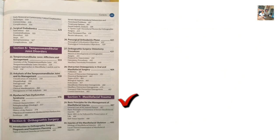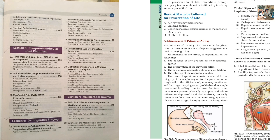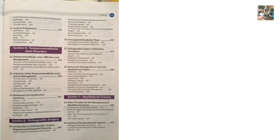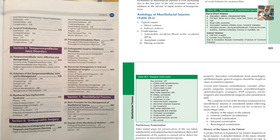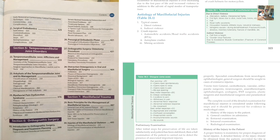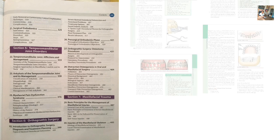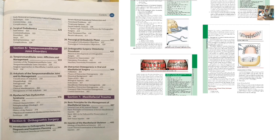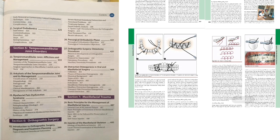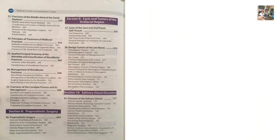Section 7: Maxillofacial trauma. The basic ABCs to be followed for preservation of life are important. Chapter 30 covers injuries of the maxillofacial skeleton. The Glasgow Coma Scale is a very important table — remember it carefully. Short note on basic principles of treatment of fractures: reduction, fixation, immobilization. Different types of dental wiring techniques are very important. Both external fixation and internal fixation are important — know their advantages, disadvantages, and procedures.